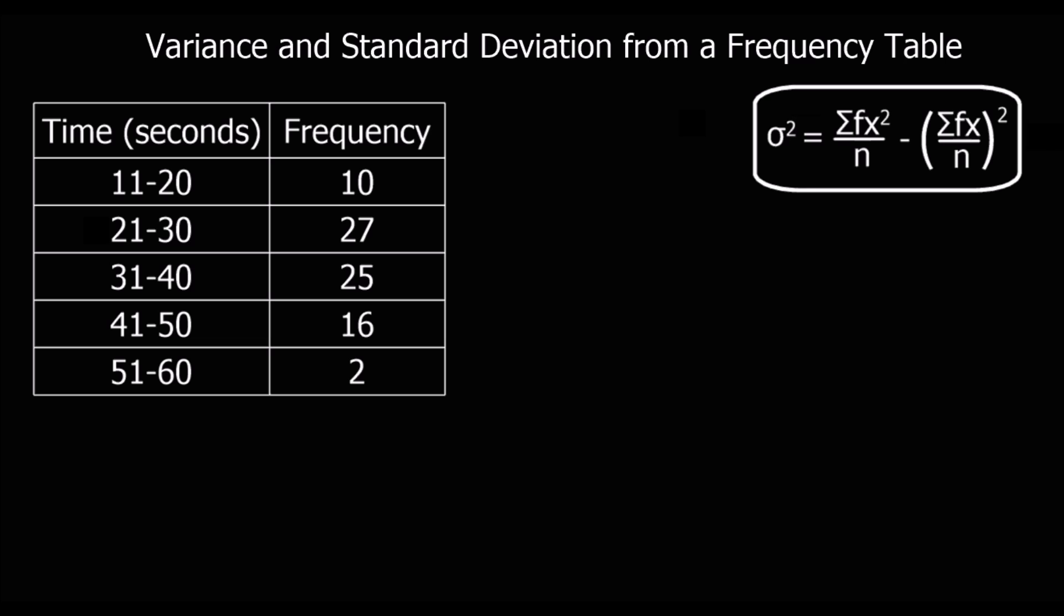In this video, we're going to look at calculating the variance and the standard deviation from a table. It's a bit like the same process as estimating the mean, but we've got to add an extra column to calculate fx squared. So as well as fx, this time we need fx squared as well.